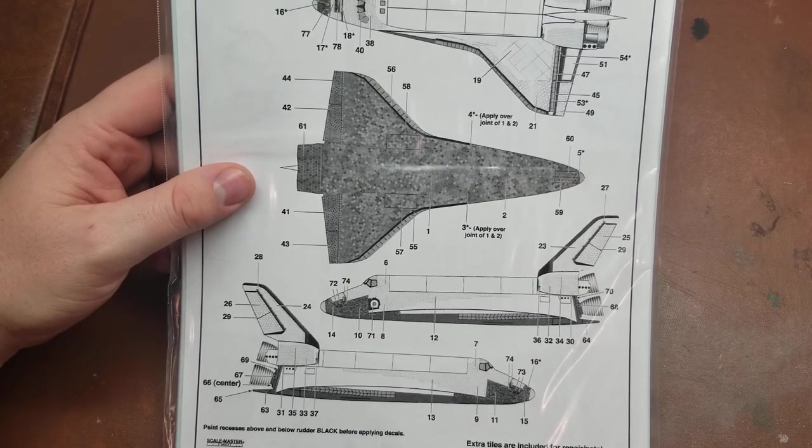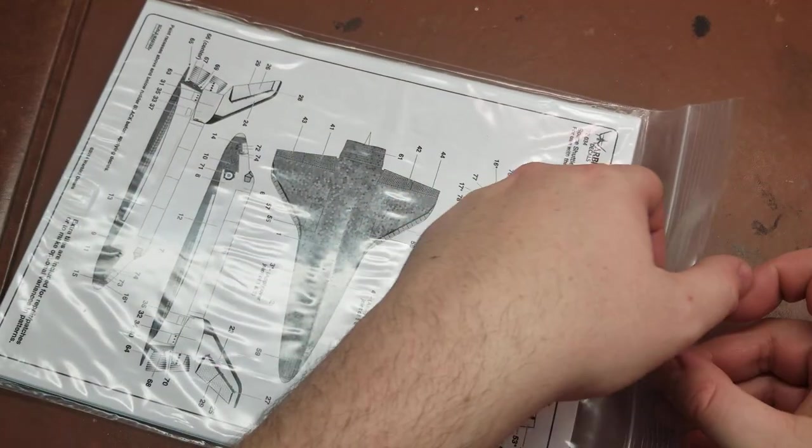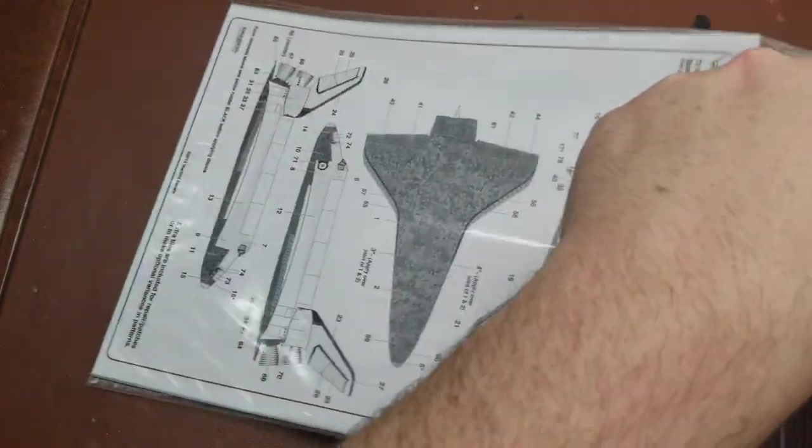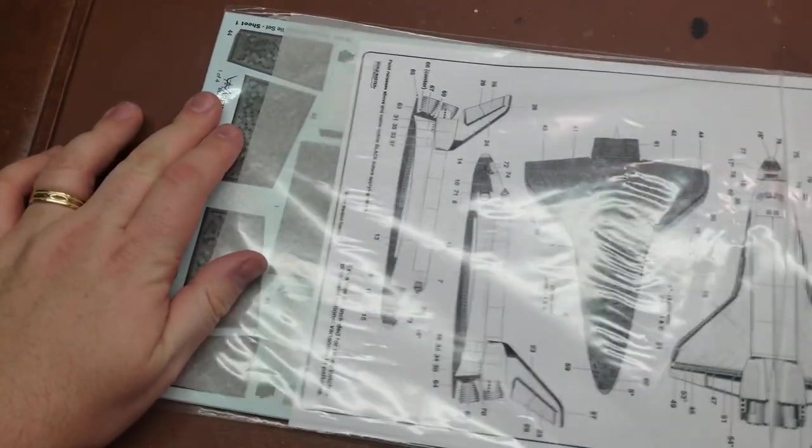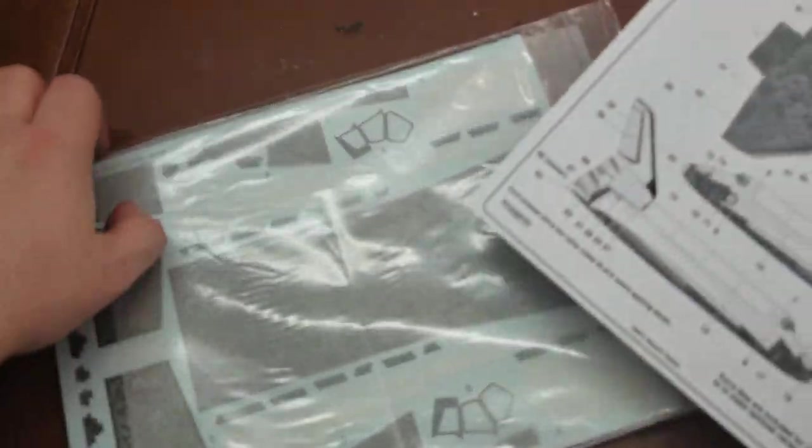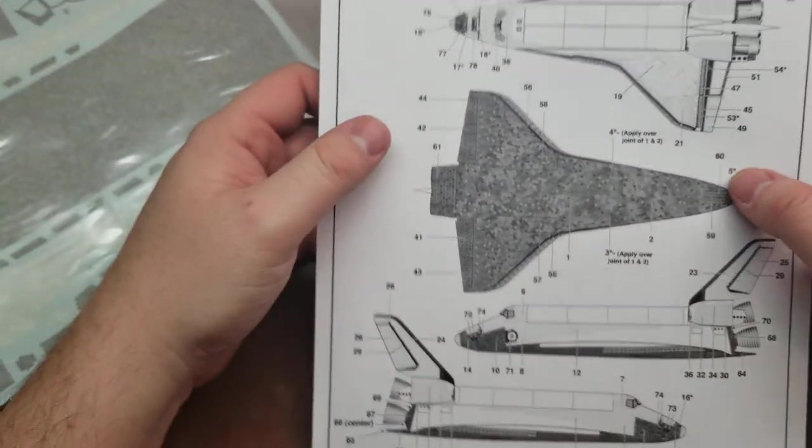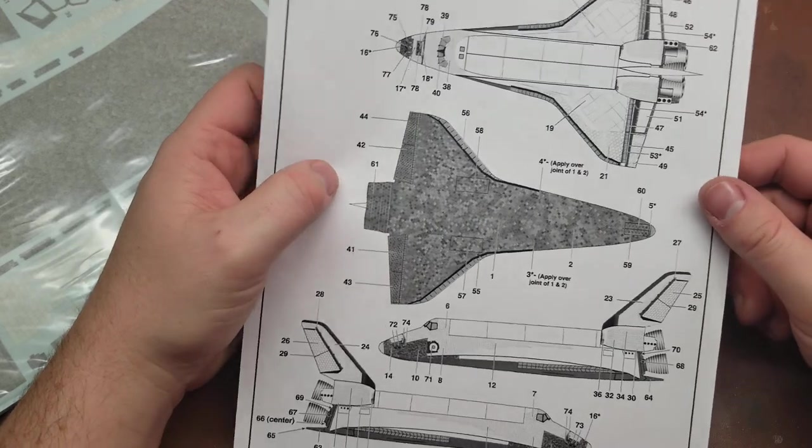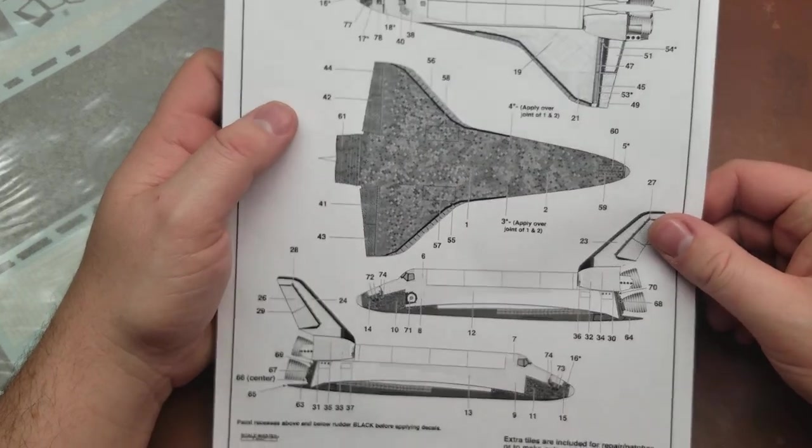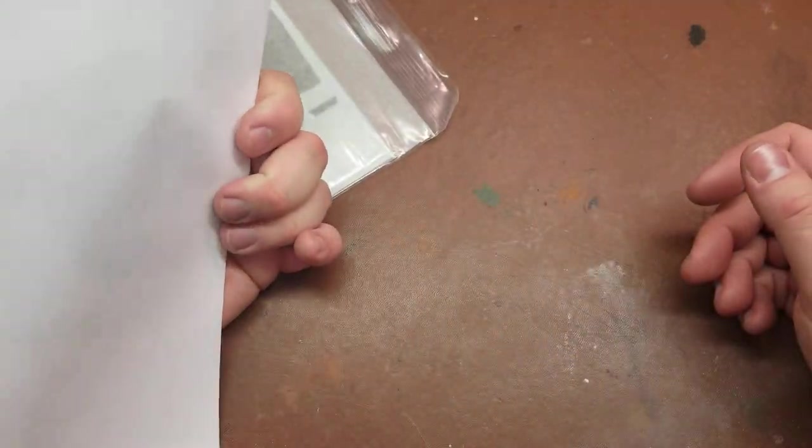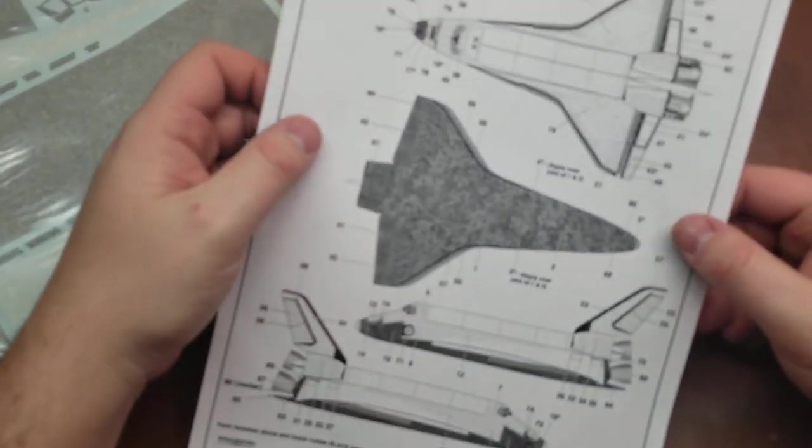The decal count is going to be quite high just because it's varying panels all over the ship or craft, however you want to call it. All you have is a single-sided instruction sheet.